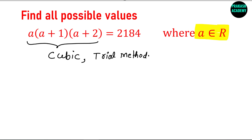One more thing you can see in this equation: it seems like there are three consecutive numbers — A, A plus 1, and A plus 2. So we may have to find some kind of consecutive numbers whose product is 2184. These three consecutive numbers have been multiplied to result in 2184. Of course, we need to find the value of A, not all three numbers.